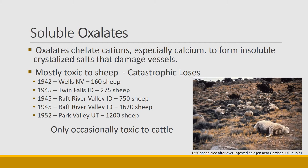Another class of compounds affecting animals on rangelands are oxalates. Oxalates occur commonly in plants in the salt desert shrub communities. They have a unique mechanism where they chelate with cations, especially calcium, forming insoluble crystallized salts. Those crystallized salts cause damage to blood and urinary vessels and any transport system in the animal's body. Death can be quite quick or delayed for several hours. It's mostly toxic to sheep, and there have been catastrophic losses — one of the first recorded was 160 sheep in Wells, Nevada in 1942, and as late as 1971, 1,250 sheep died from overingestion of halogeton, an oxalate-containing plant.